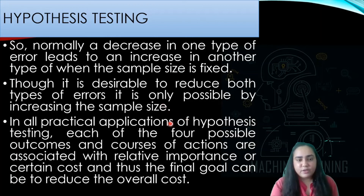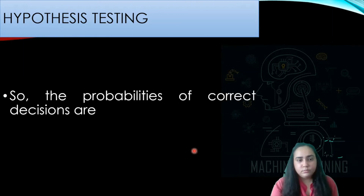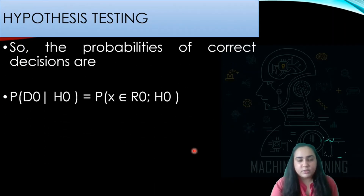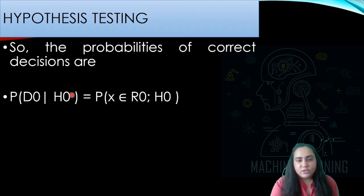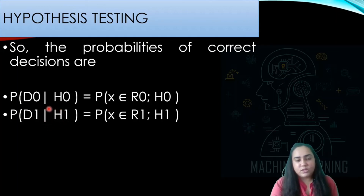In all practical applications of hypothesis testing, each of the four possible outcomes is associated with relative importance or certain cost, and the final goal is to reduce the overall cost or error. The probability of a correct decision to accept H0 when H0 is actually correct is the probability of x belonging to R0 given H0. The probability of deciding to accept H1 when H1 is also actually correct is the probability of x belonging to R1 given H1.